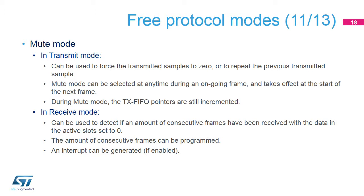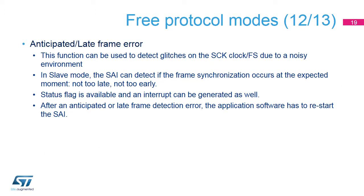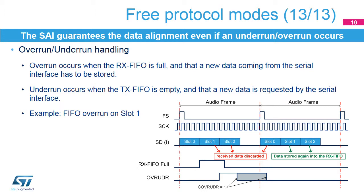The receive mute mode can be helpful to detect an amount of consecutive slots having all data reset to zero. The anticipated or late frame error detection function increases the interface's reliability by detecting unexpected frame synchronization misalignment. A status flag is set and an interrupt can be generated as well. The application software will then have to restart the SAI interface. The SAI guarantees data alignment even if an underrun or overrun occurs.